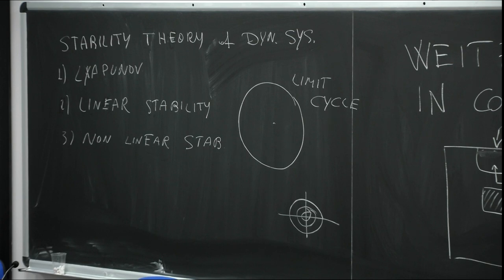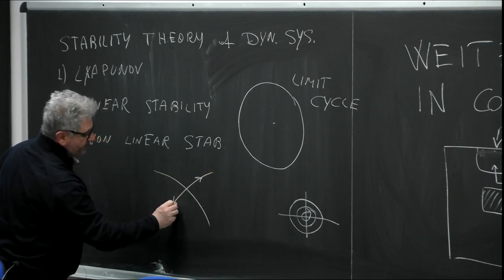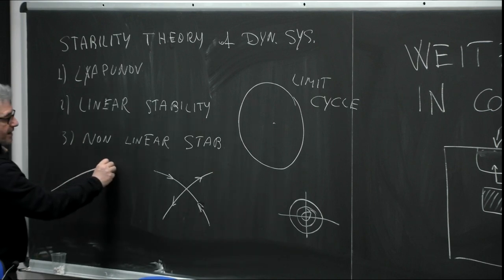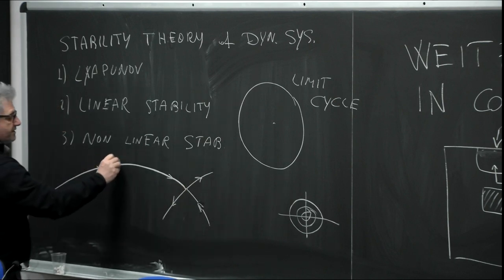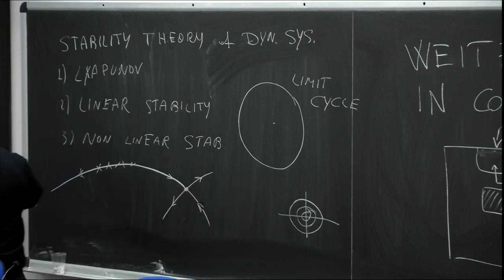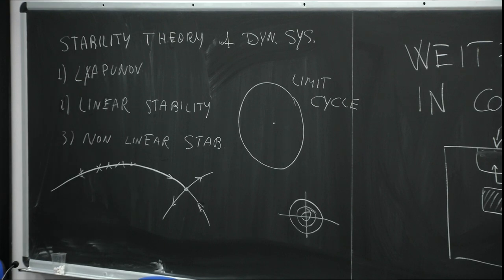The stable manifold is the set of the phase space that, in the limit of the flow, arrives at the fixed point. For example, for a saddle, the stable manifold consists of all points which sooner or later — even in the infinite-time limit — arrive at the fixed point. The unstable manifold instead is the set of phase space points that in the limit t → −∞ goes away from the fixed point.